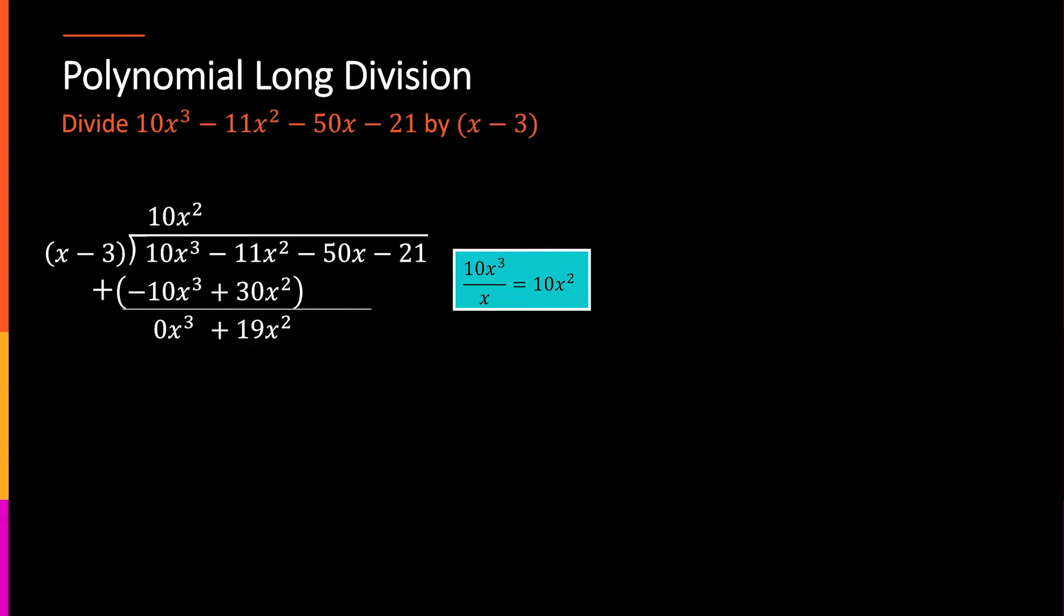And just like with the regular long division, when I'm doing polynomial long division, I'm going to drop the next part and do this whole process over again. So, I look at the remaining leading term. Because the zero, I don't have to write zero x³, I'm just doing that so it's clear what's happening. But the new leading piece is this 19x², so I'm going to divide by that x and see what the next piece is going to be.